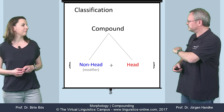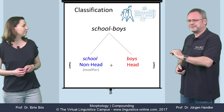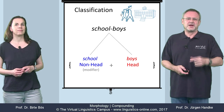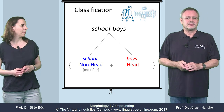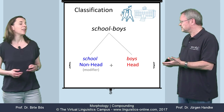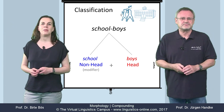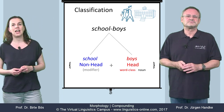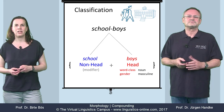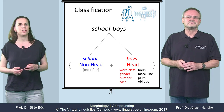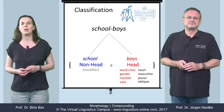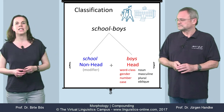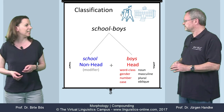Here is an example: 'schoolboys.' It consists of two base forms, and 'boy' is the head. Boy determines the central grammatical properties of the compound, that is, the syntactic category or word class. It mostly defines the gender and it specifies the inflectional properties, for example, number or case. In English, the head normally stands on the right-hand side of the compound.